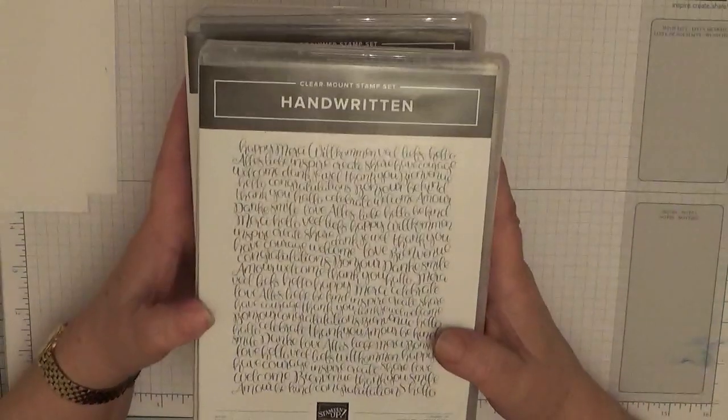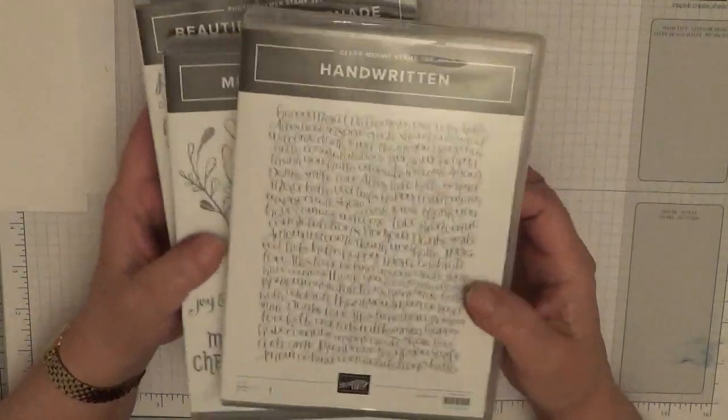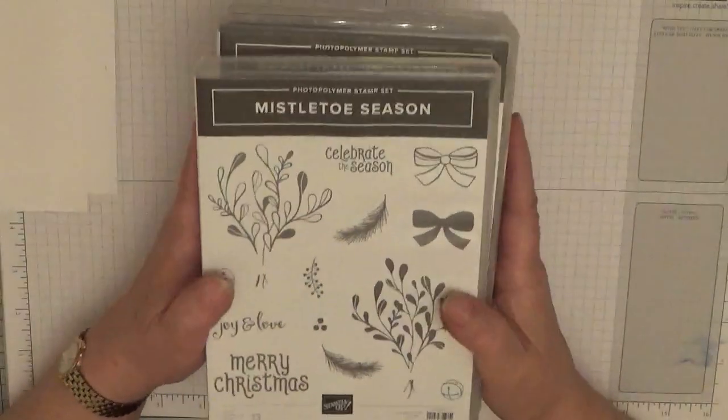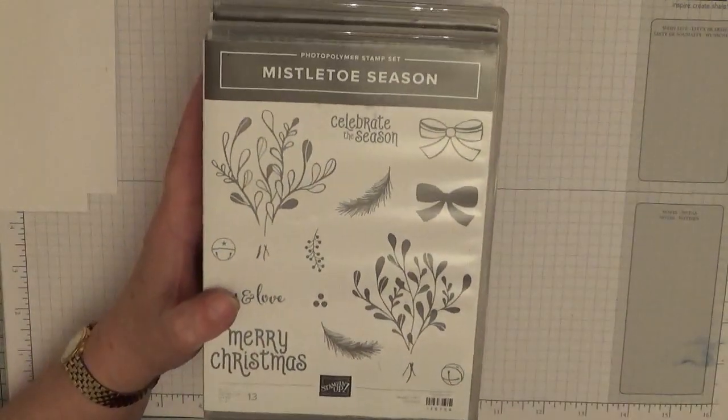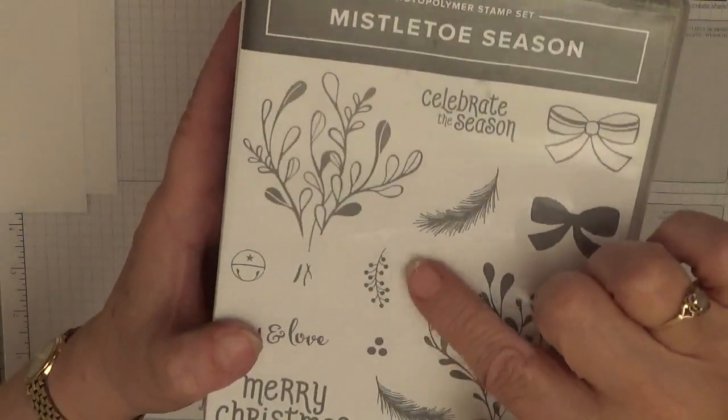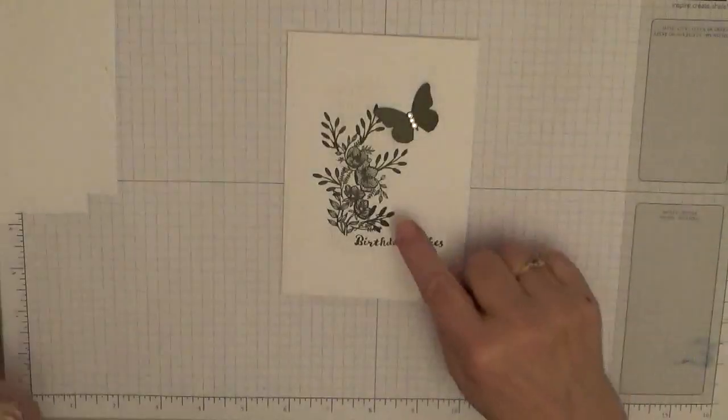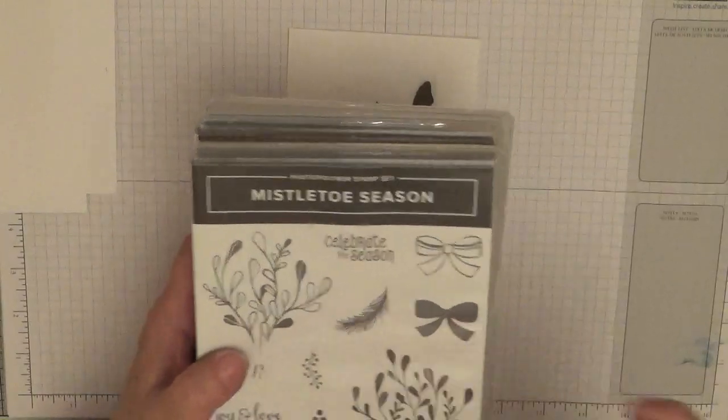We're also going to use the handwritten background stamp which is in the annual catalogue. And we're also going to use Mistletoe Season. I know Christmas is finished but I want to use that little tiny image there. Instead of these leaves here, I want to use the tiny image.